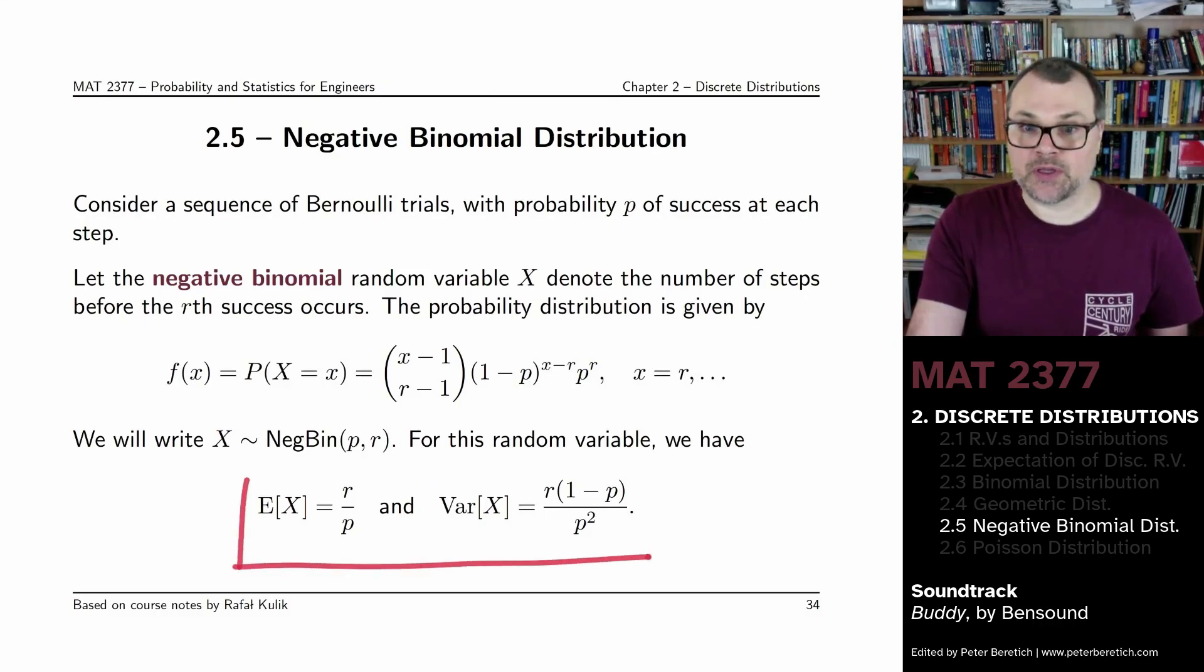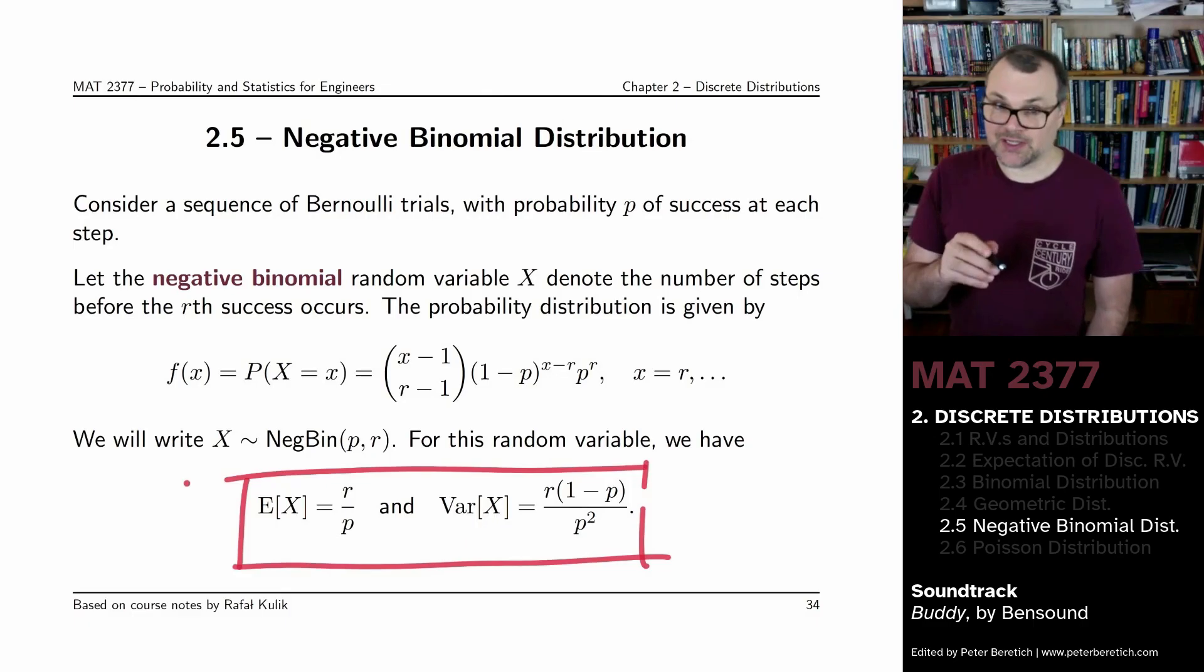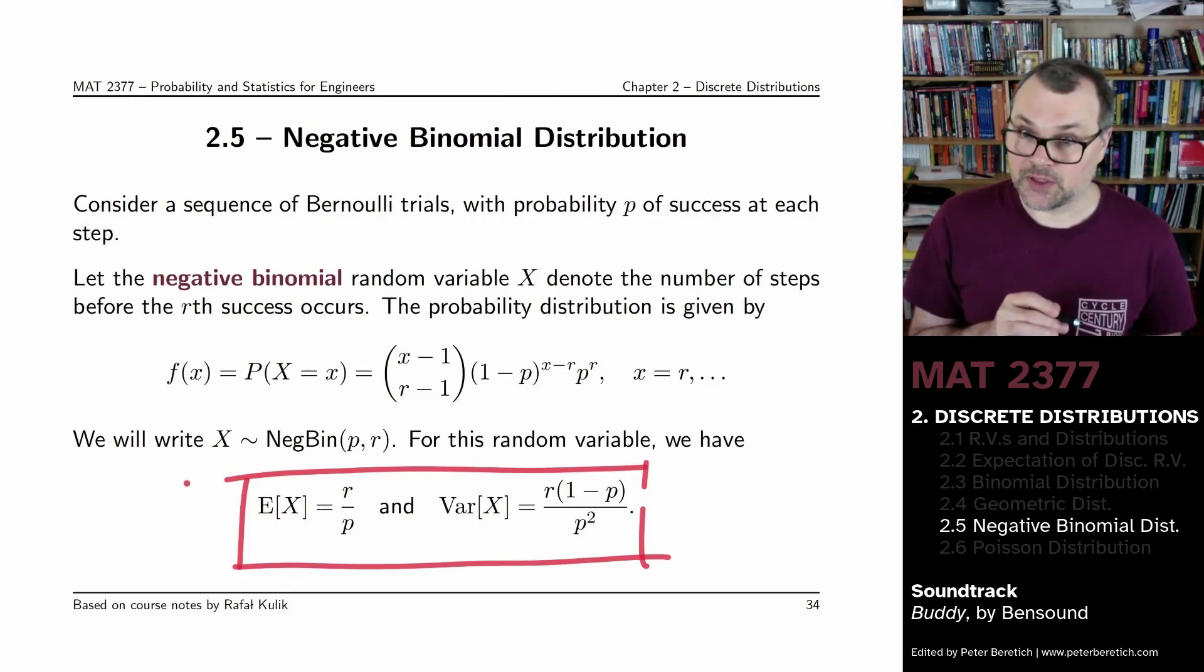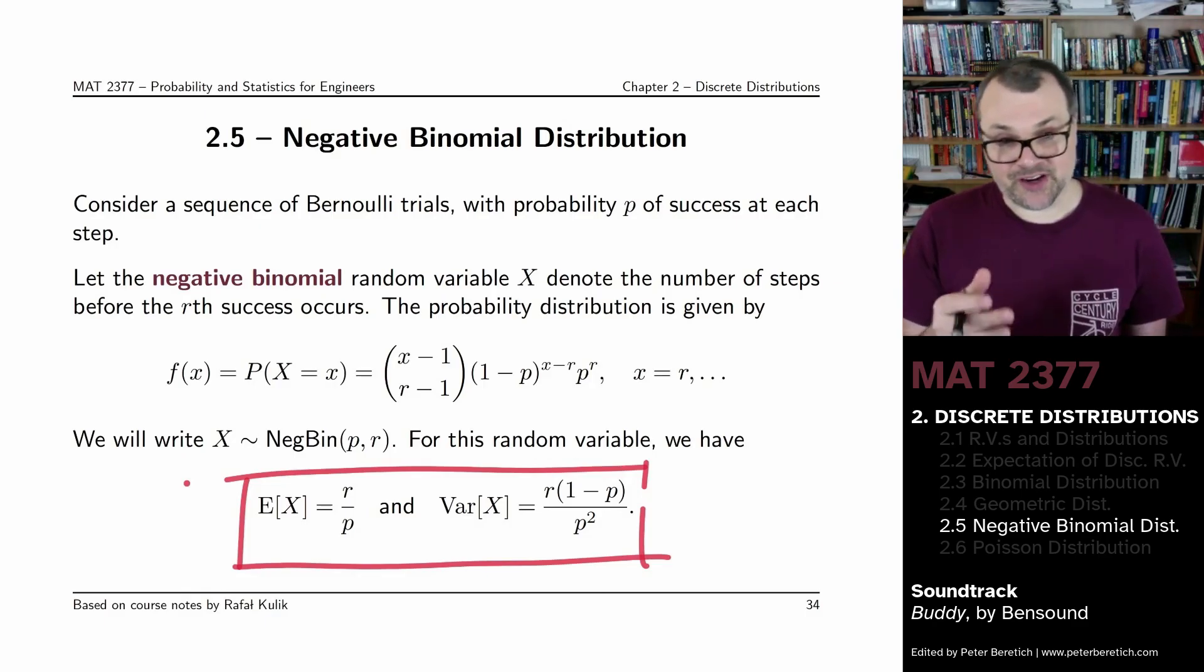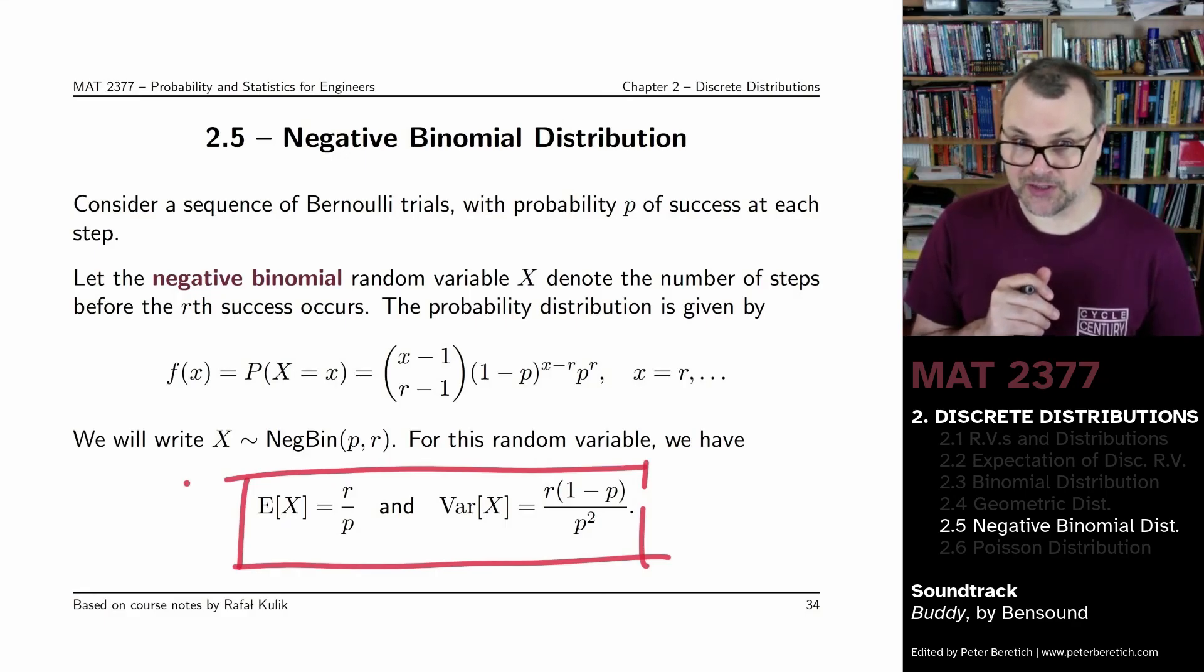And in this case, your expectation will be R divided by P, which is R times the expectation of the geometric distribution. And the variance will be R times 1 minus P, the probability of failure, divided by the square of the probability of success.